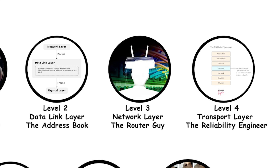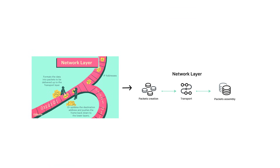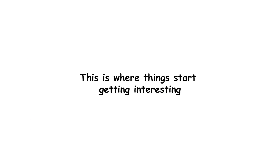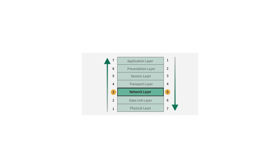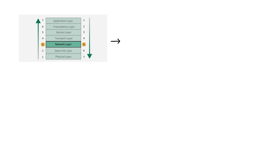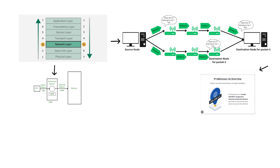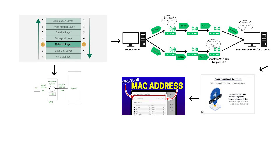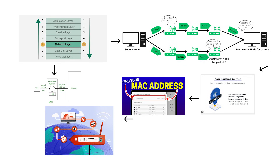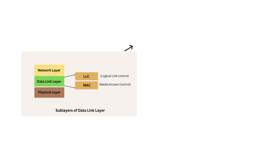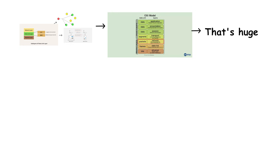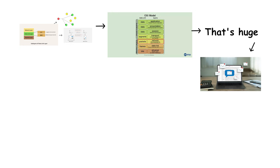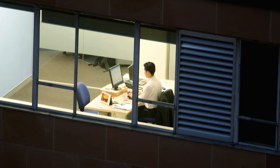Level 3: Network Layer — the router guy. Welcome to mid-tier understanding. This is where things start getting interesting. These people understand what separates a local network from the actual internet. The network layer is Layer 3 of the OSI model, responsible for logical addressing and routing — this is where IP addresses come into play. While MAC addresses get you around your local network, IP addresses let you communicate with any device anywhere on the internet. The data link layer handles communication within a single network; the network layer handles communication between different networks. That's literally the difference between emailing your co-worker across the room versus emailing someone in Japan.